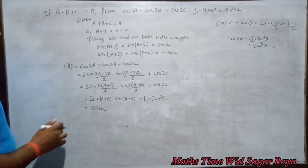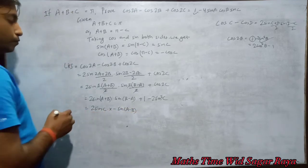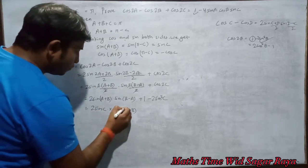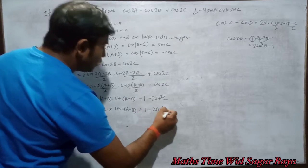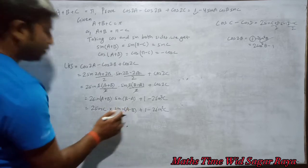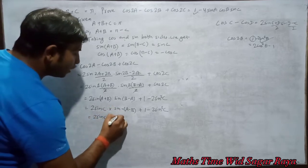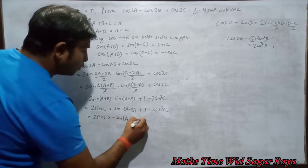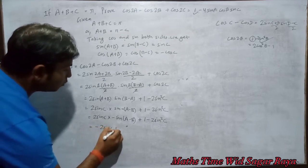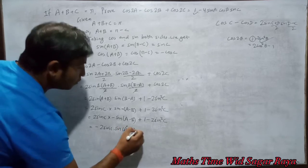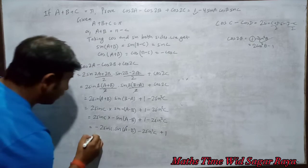So we have 2 sin C · sin(B minus A) plus 1 minus 2 sin² C. Now sin(B-A) can be written as minus sin(A-B), giving minus 2 sin C · sin(A-B) plus 1 minus 2 sin² C. Rearranging: minus 2 sin C · sin(A-B) minus 2 sin² C plus 1.